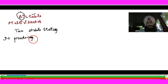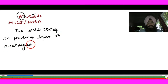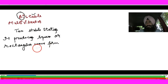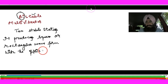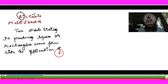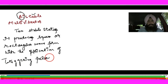Zero is a stable state and one is also a stable state. So it can produce a square wave or rectangular wave. This is the application of the bi-stable multivibrator.